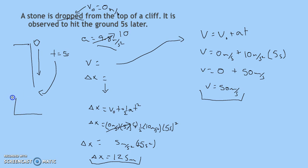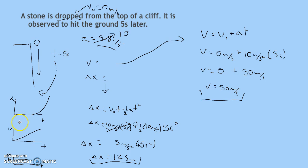We're going to sketch some graphs. For position versus time it's going to look like a curve. For velocity versus time we start from 0 and go to positive. If we sketch a graph for acceleration versus time, it's going to just be positive 10 the whole time. All of these graphs are flipped in the case that we set up as positive — for these calculations I said down was positive.